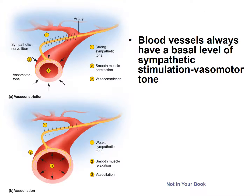An obvious question is: how do you have an increase and decrease in the activity of an organ if only one subsystem controls it? Quite simply, you can change the activity of that organ by increasing or decreasing the activity of that one subsystem. There is always a certain level of what is called vasomotor tone — as long as you are alive, the sympathetic nervous system is always stimulating smooth muscles in the walls of blood vessels to contract. If that were not the case, blood pressure would drop so low that you would go into shock and die.